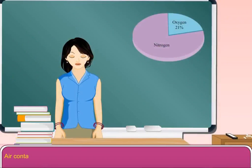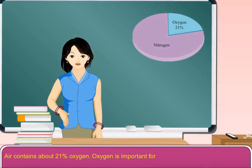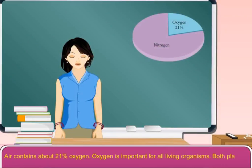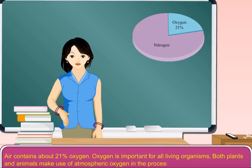Air contains about 21% oxygen. Oxygen is important for all living organisms. Both plants and animals make use of atmospheric oxygen in the process of respiration.